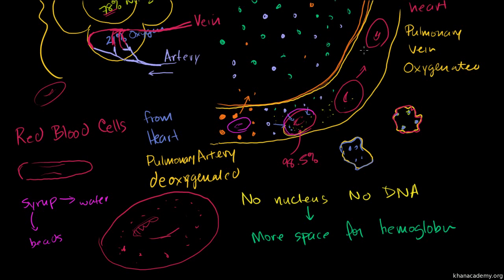So what's the solution if you wanted to transport syrup in water? You could put the syrup inside little containers or beads, let the beads flow in the water, and then the water wouldn't be all gooey. That's exactly what's happening inside our blood. Instead of having hemoglobin sit in the plasma and make it gooey, it sits inside these beads — the red blood cells — allowing the flow to remain non-viscous. I've been zoomed in on the alveolus and the pulmonary capillaries. Let's zoom out a lot.